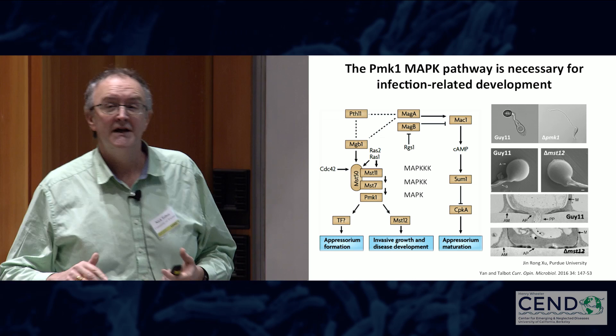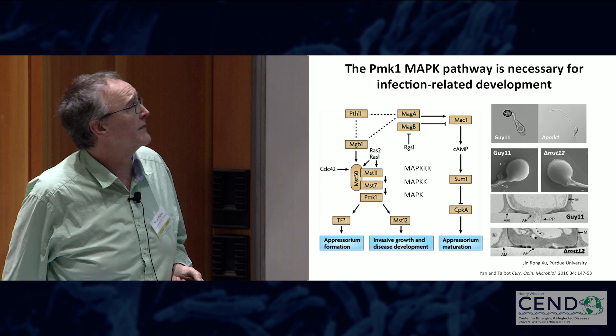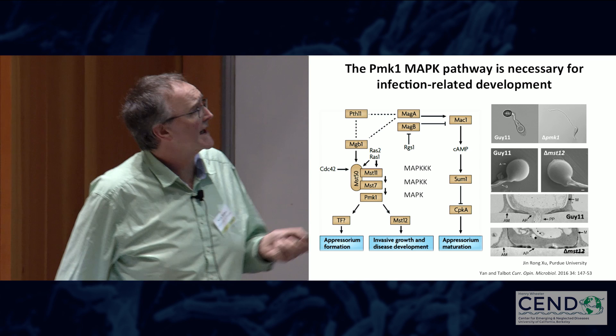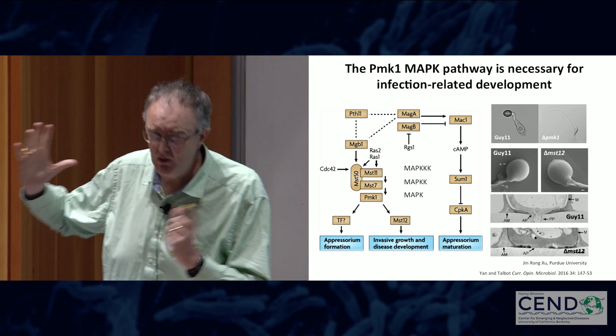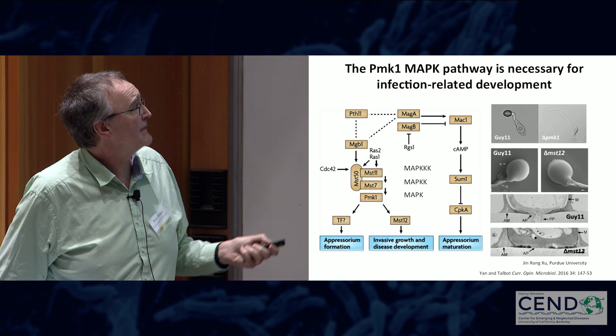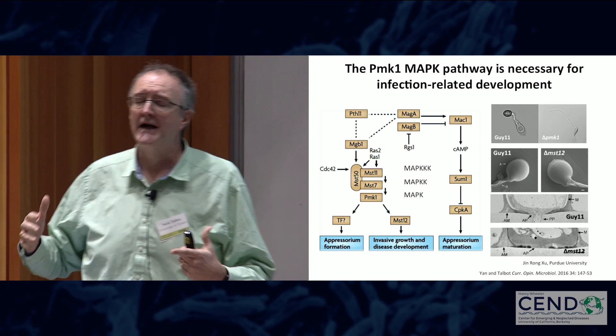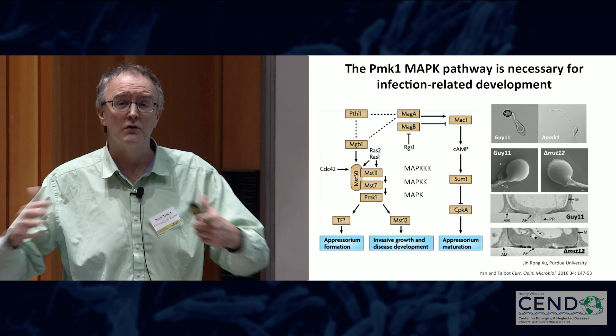That triggers morphogenesis and appressorium formation, such that if you delete the single MAP kinase PMK1, the fungus is no longer able to make an appressorium properly. At the same time, there's trafficking of spore contents into the appressorium. This is the responsibility of the cyclic AMP response pathway, which controls cellular storage products — things like lipid body movement and degradation, glycogen degradation, and the control of primary metabolism, which has to be radically changed during appressorium morphogenesis.